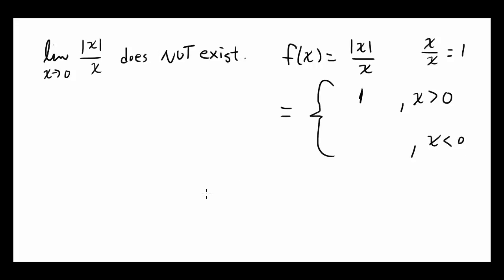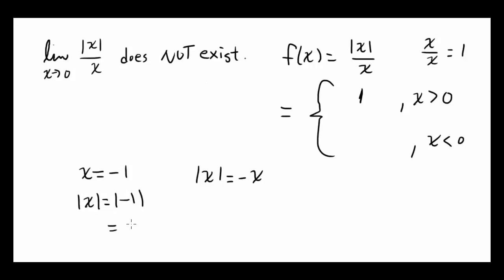When x is less than 0, absolute value of x is going to come out to be negative x. You can think about this in various ways — let x equal negative 1. Then absolute value of x is absolute value of negative 1, which is 1. And you see this is negative of x, or negative of negative 1. So if x is less than 0, absolute value of x is negative x, giving you negative x over x, which comes out to be negative 1.